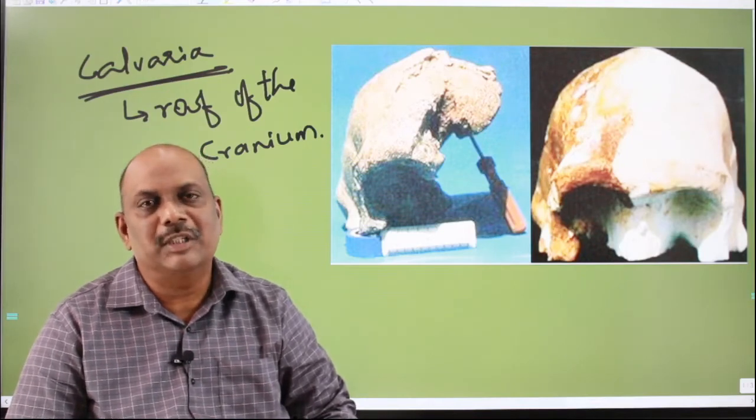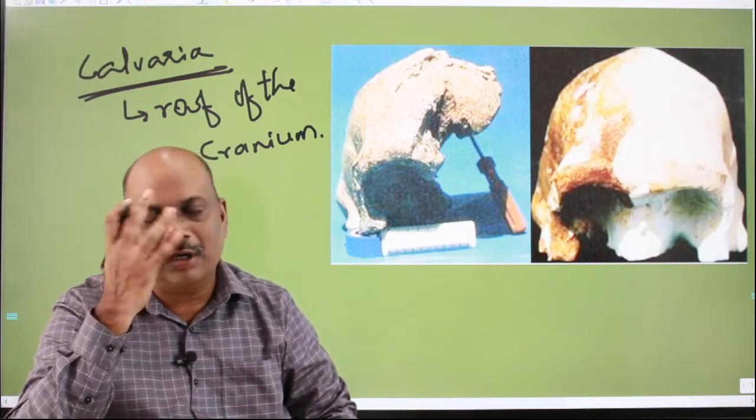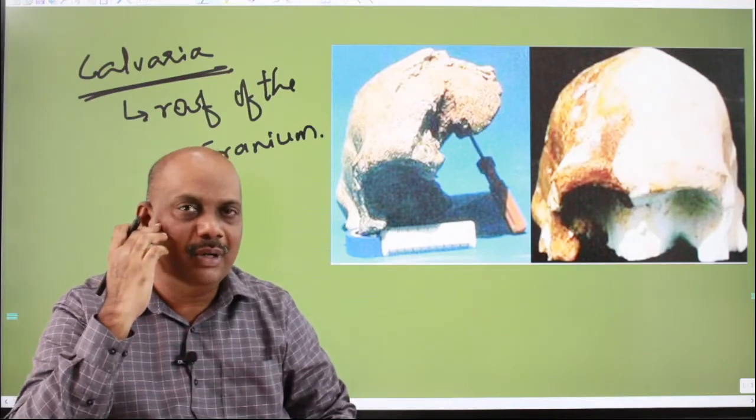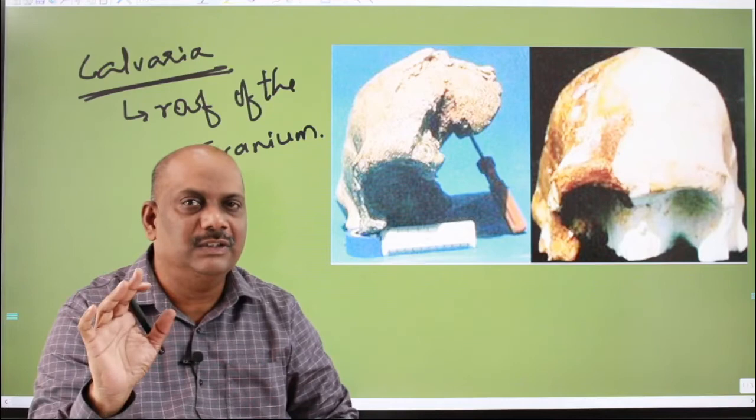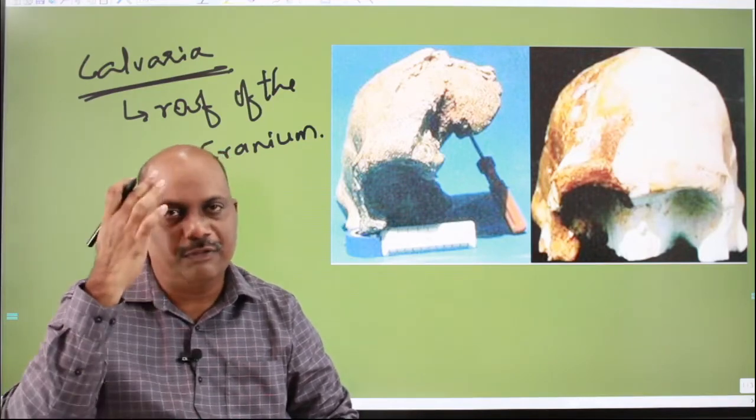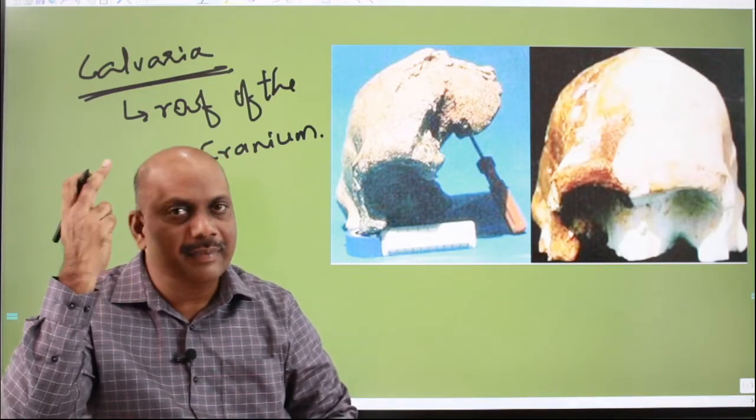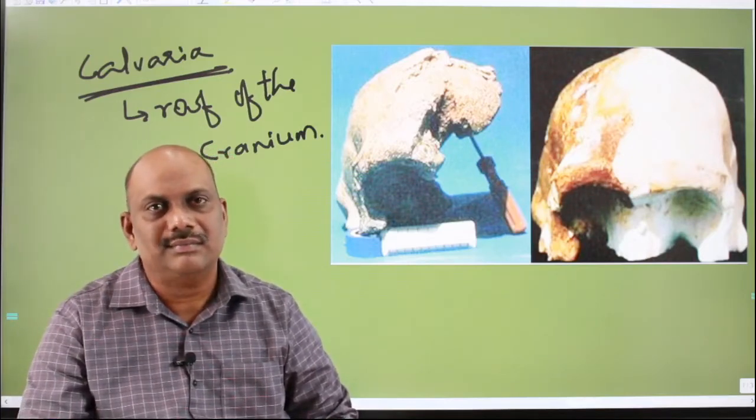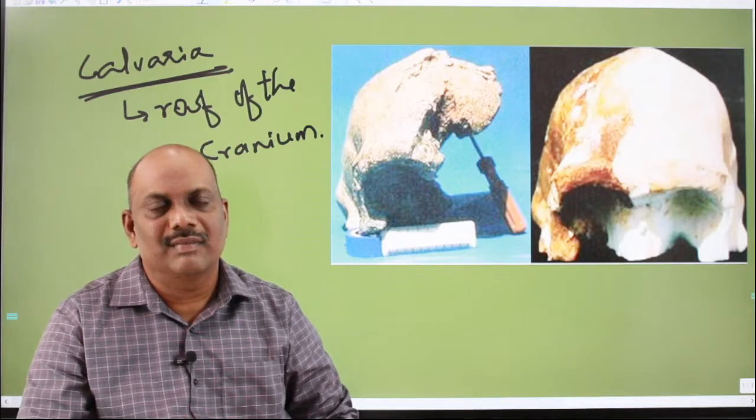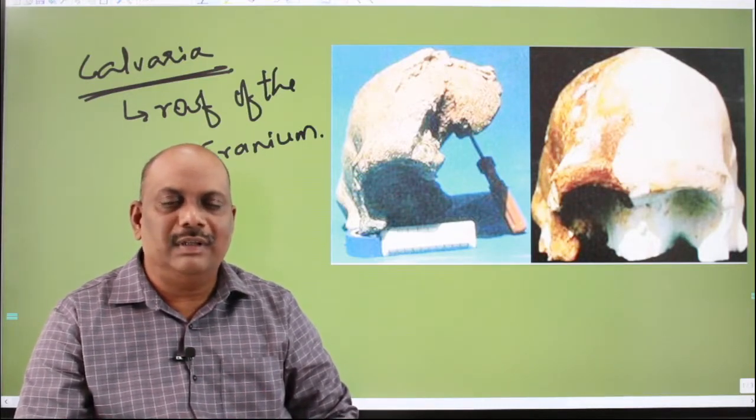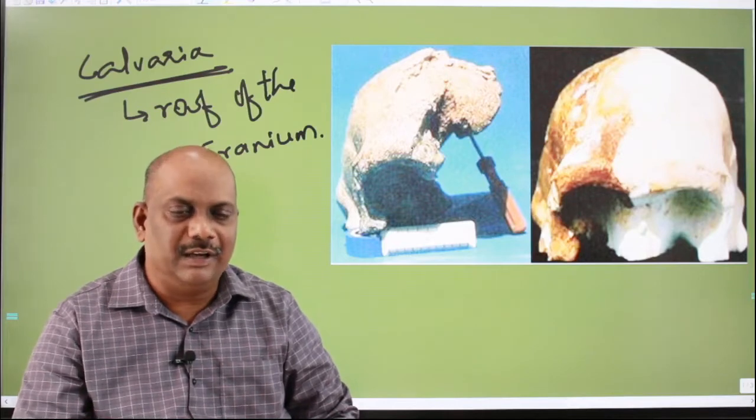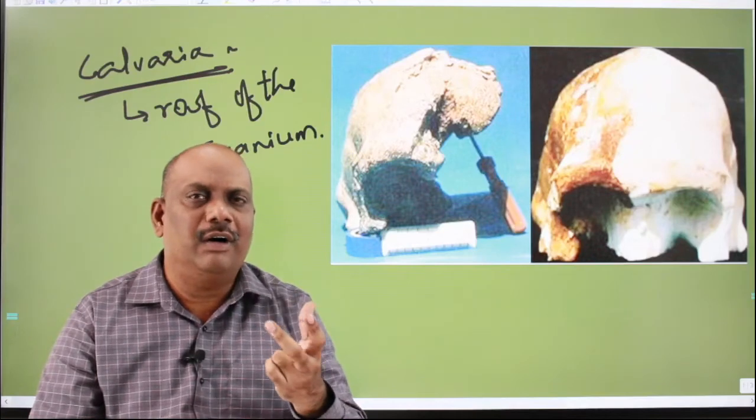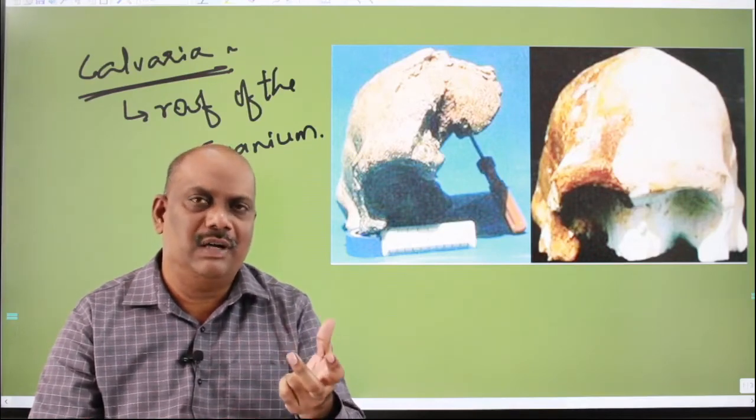But in evolutionary perspective, both the sphenoid bone and the ethmoid bone and even the temporal bone that is of little significance. That's why we kept discussing only about the frontal, the parietal, the occipital and to some extent the temporal bone. The roof of the cranium is called as calveria. Arun Sonakia managed to discover the roof of the cranium, which you call it as calveria.